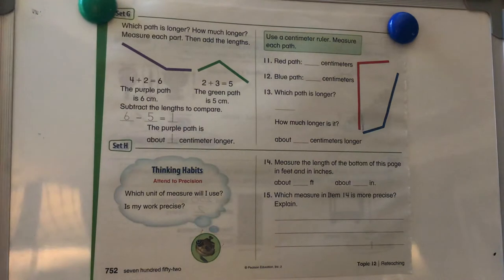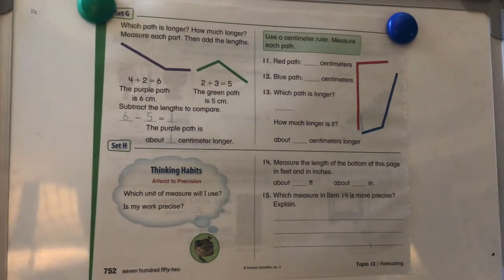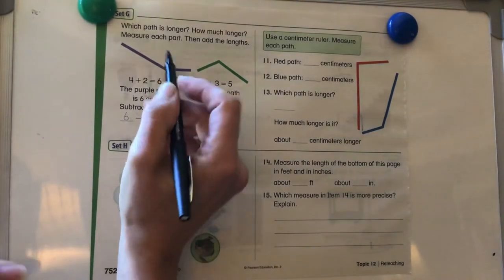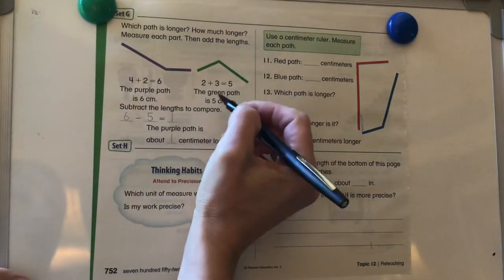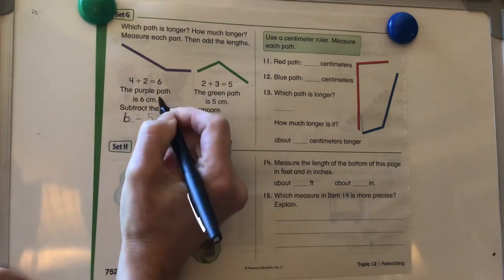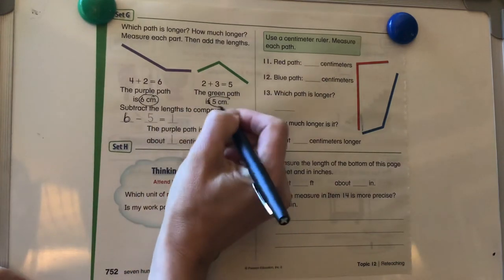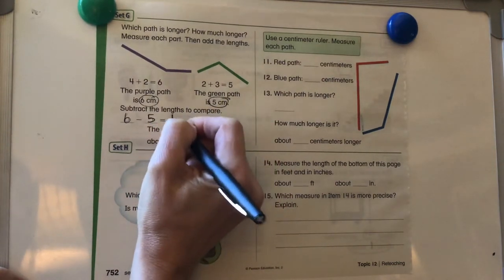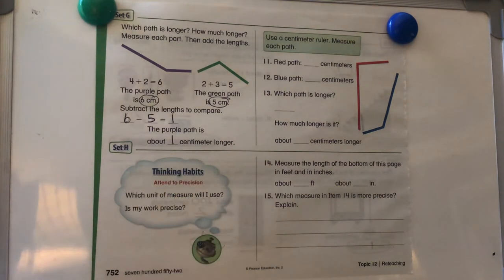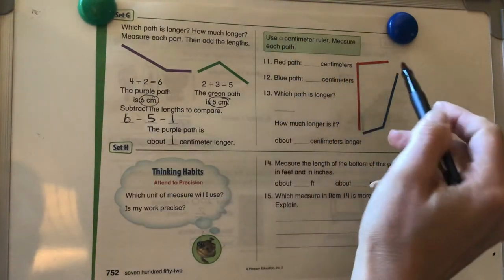Let's take a look at this one. It says, which path is longer? How much longer? So let's take a look. The purple path is six centimeters. The green path is five centimeters. So we want to see how much longer. Six centimeters here minus five centimeters here is equal to one centimeter. So it's about one centimeter longer. We're going to use a centimeter ruler and we're going to measure these.